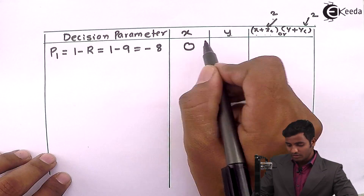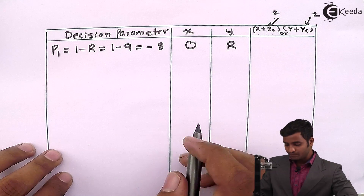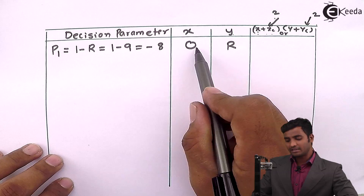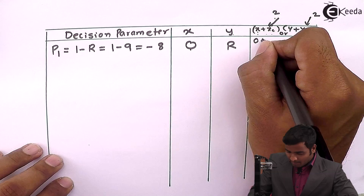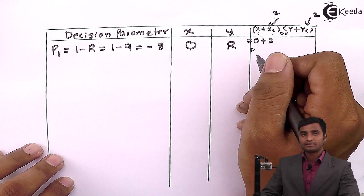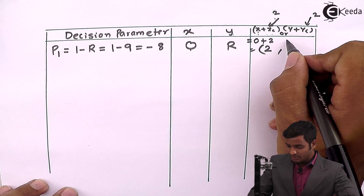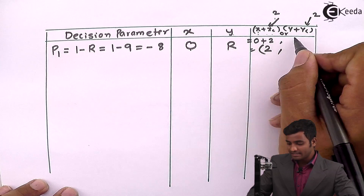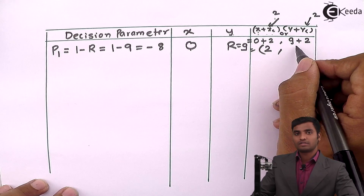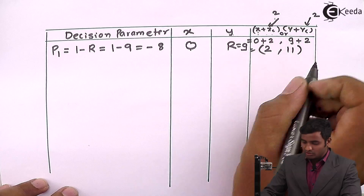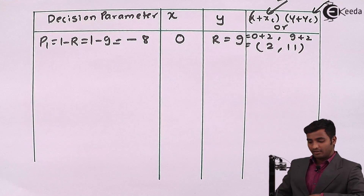The starting value of X is 0 and starting value of Y is radius (9). So the initial X + Xc = 0 + 2 = 2, and Y + Yc = 9 + 2 = 11. The first coordinate is (2, 11). Now we plot it for the first pixel and will calculate the corresponding pixels.